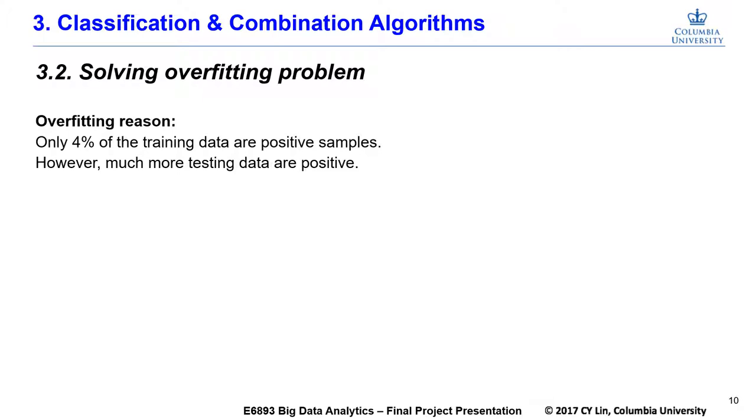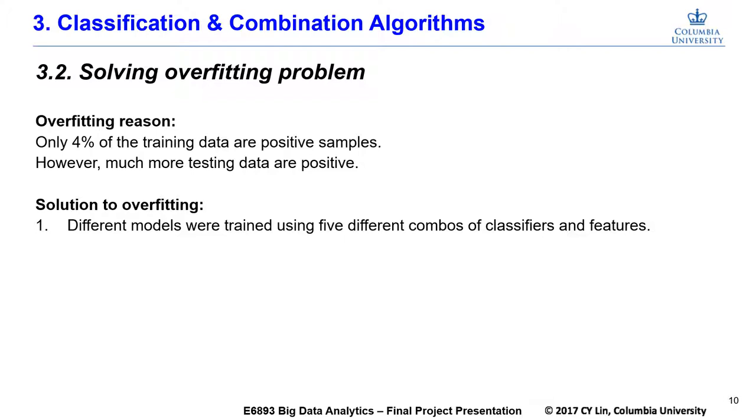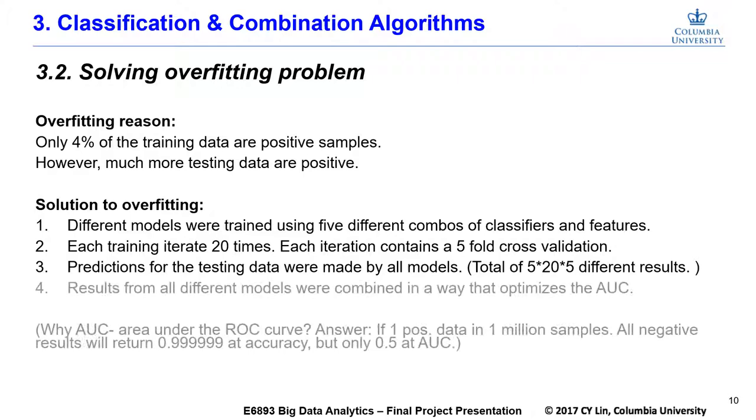In the solution, different models were trained using 5 different combos of classifiers and features. Each training iterated 20 times. Predictions for the testing data were made by all models. Results from all different models were combined in a way that optimizes the AUC.